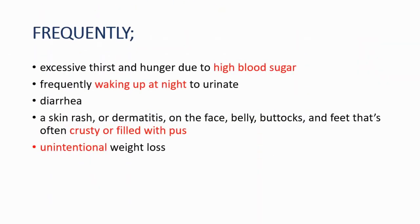Generally, excessive thirst and hunger due to high blood sugar, frequently waking up at night to urinate, and diarrhea. There is also a skin rash or dermatitis on the face, belly, buttocks, and feet. This rash is often crusty or filled with pus, and we can also see unintentional weight loss.